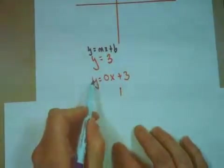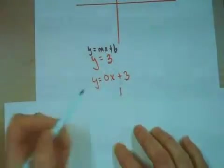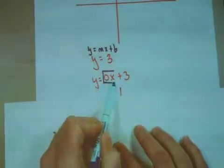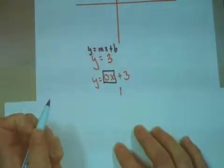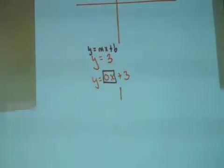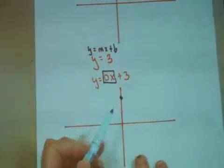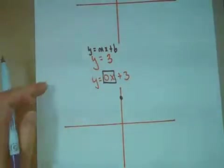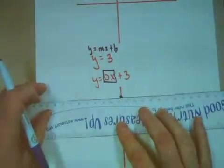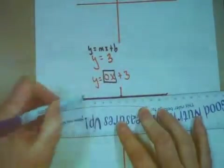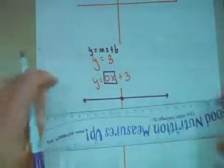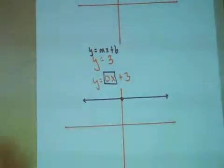In other words, I have y equals 0x plus 3. This means my line does not rise. It just runs. So when I plot this, I'm going to go up 1, 2, 3, and all my line does is run. It never rises. If all it does is run, it's a nice horizontal line.